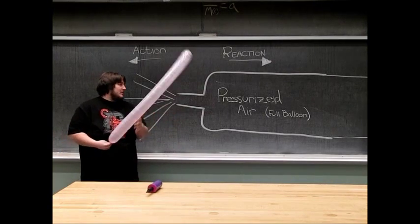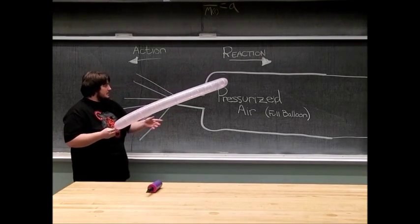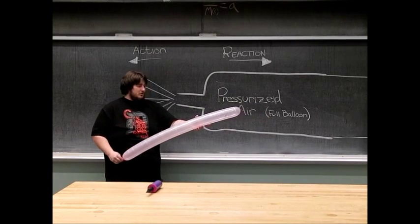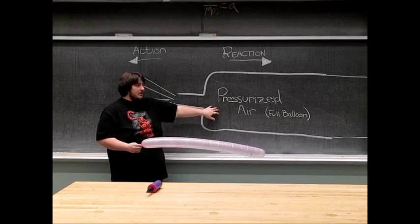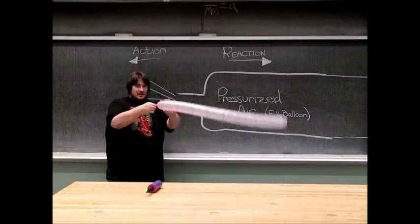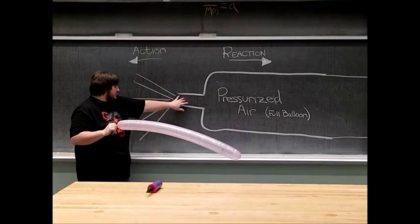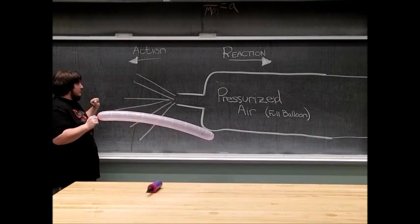This is our rocket balloon. So, how it works is we have the balloon, which is a reservoir of pressurized air, and when I release the end of the balloon, the pressurized air will rush out of the end of the balloon.